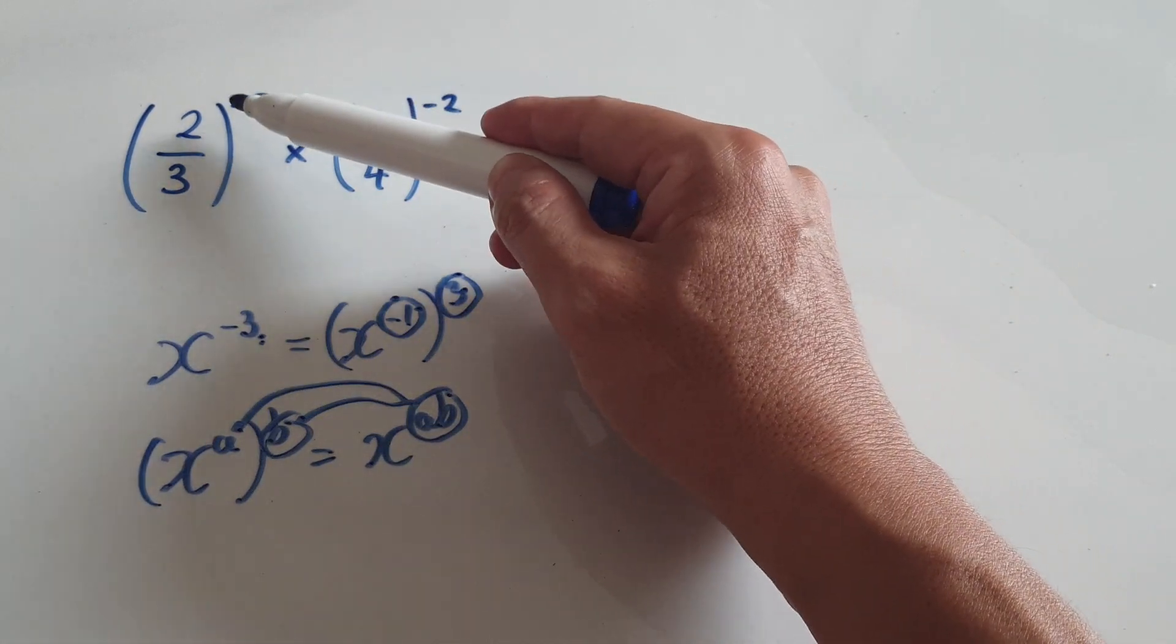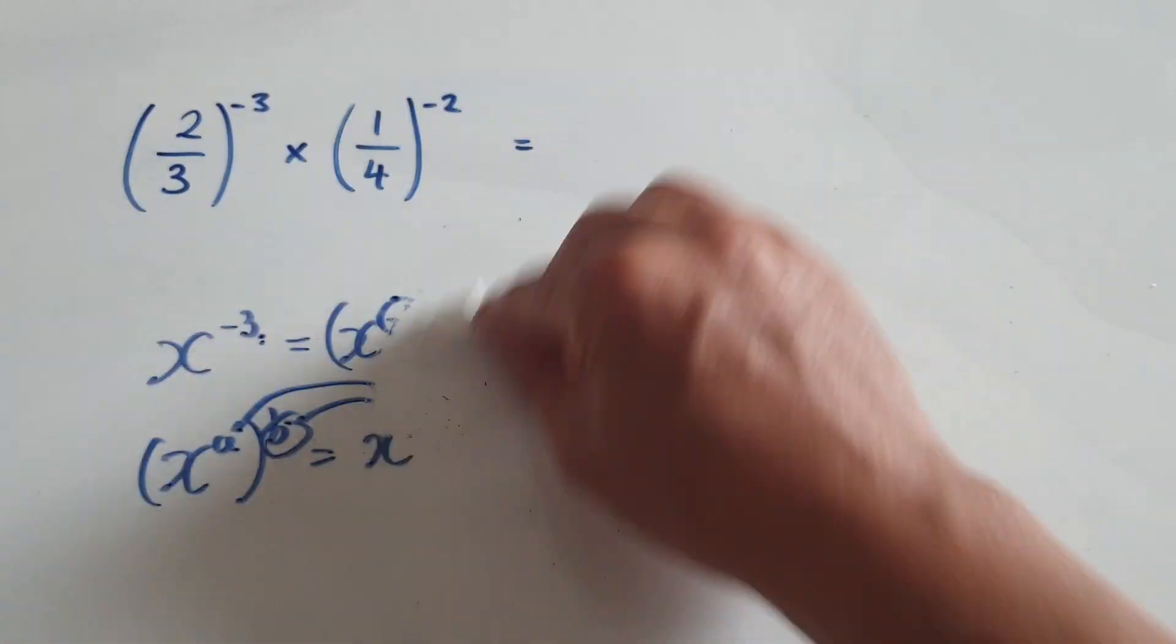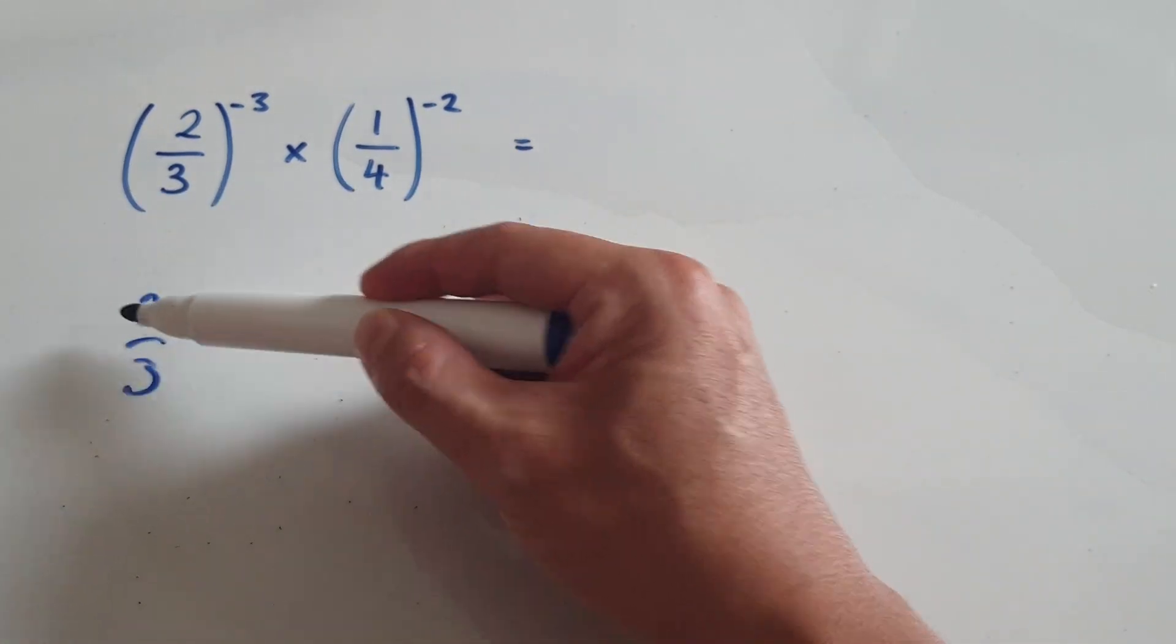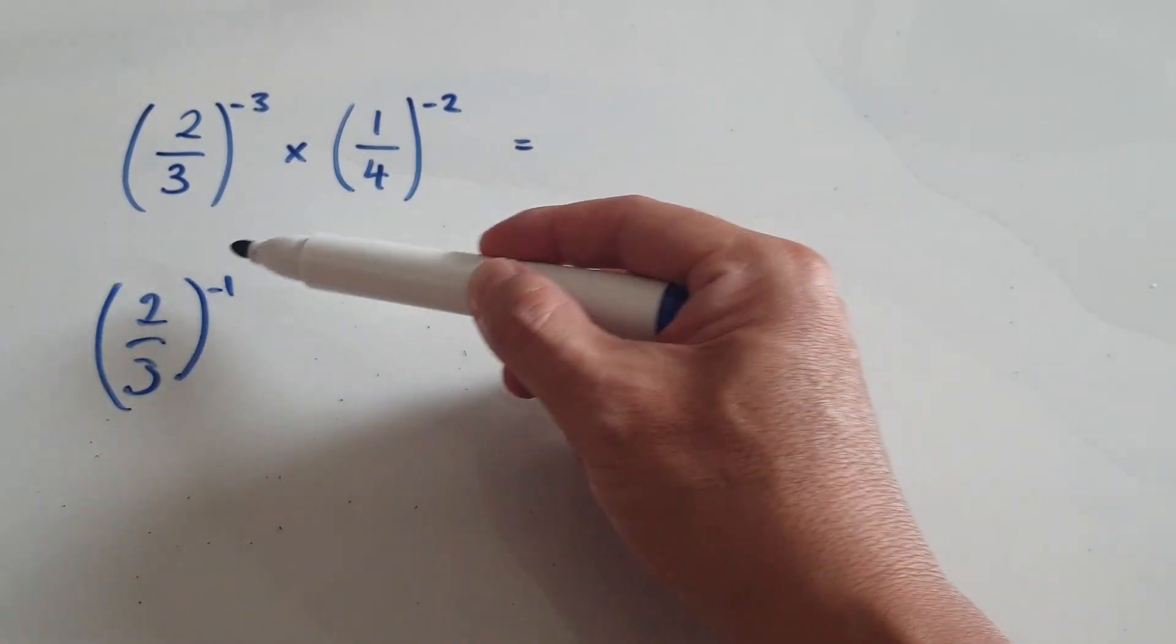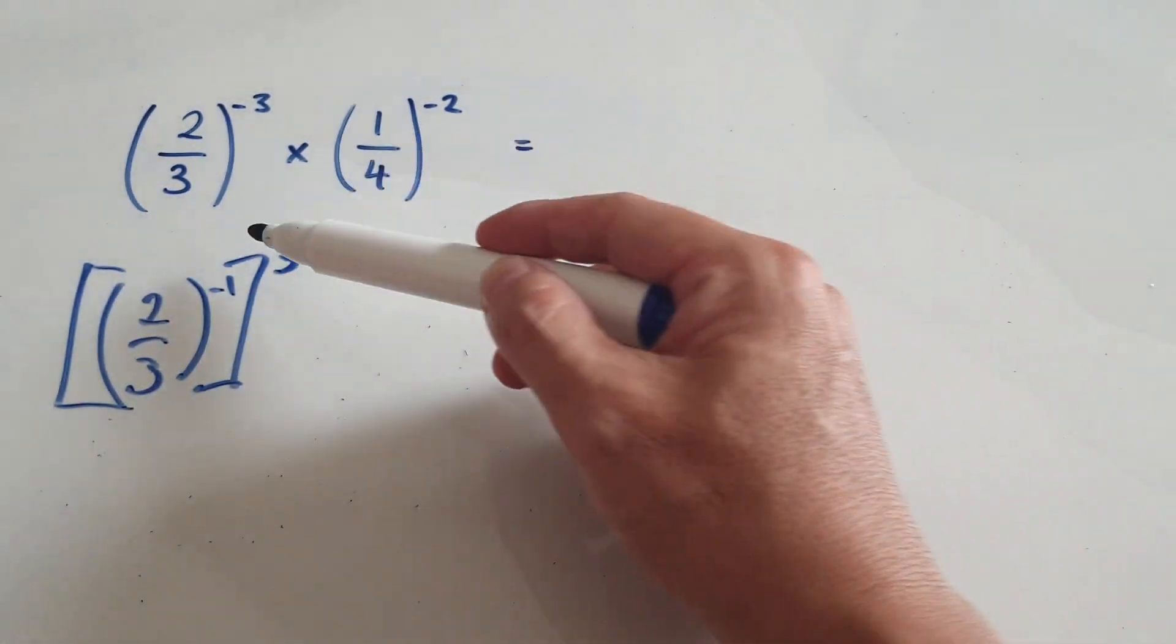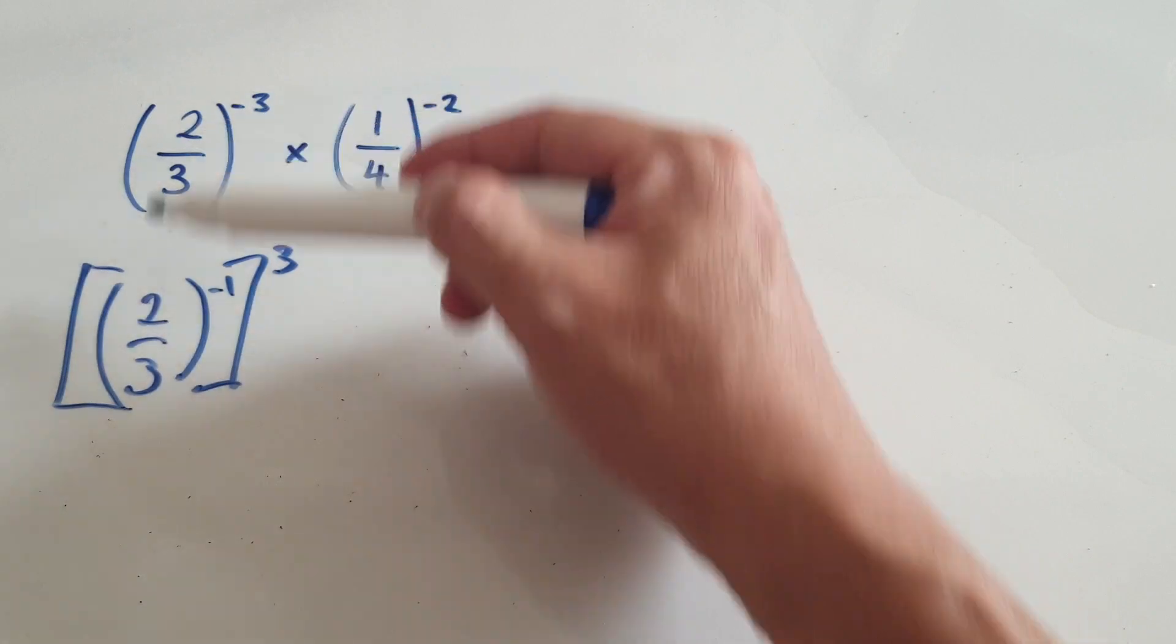The point I'm trying to make is that when you see this, you extract the negative 1. So for example, imagine this as 2 over 3 to the power of negative 1 and then to the power of positive 3. So this block here is the same as this.